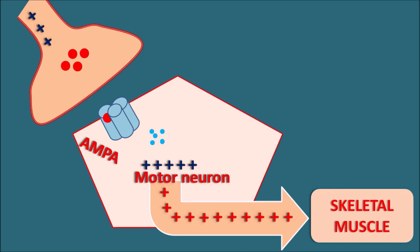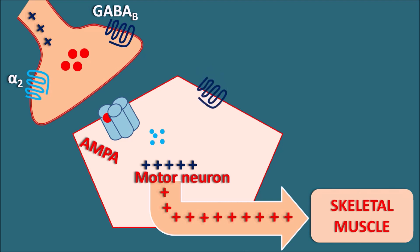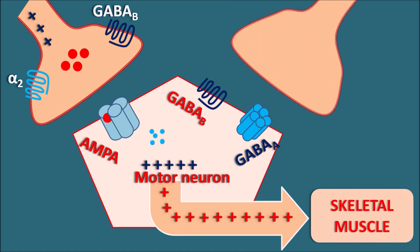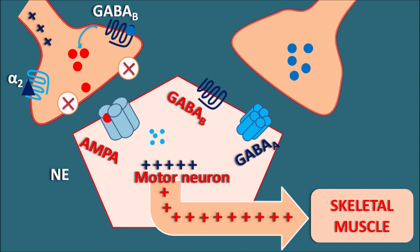This signaling is controlled by inhibitory neurotransmitters within the CNS. On the presynaptic neuron we observe alpha-2 receptors and GABA-B receptors — both G-protein coupled receptors — which control glutamate release. Glutamate acts as an excitatory amino acid producing motor activation, but inhibitory neurons can release GABA, which binds to presynaptic GABA-B receptors to inhibit glutamate release. Norepinephrine acting on presynaptic alpha-2 receptors similarly inhibits glutamate release.